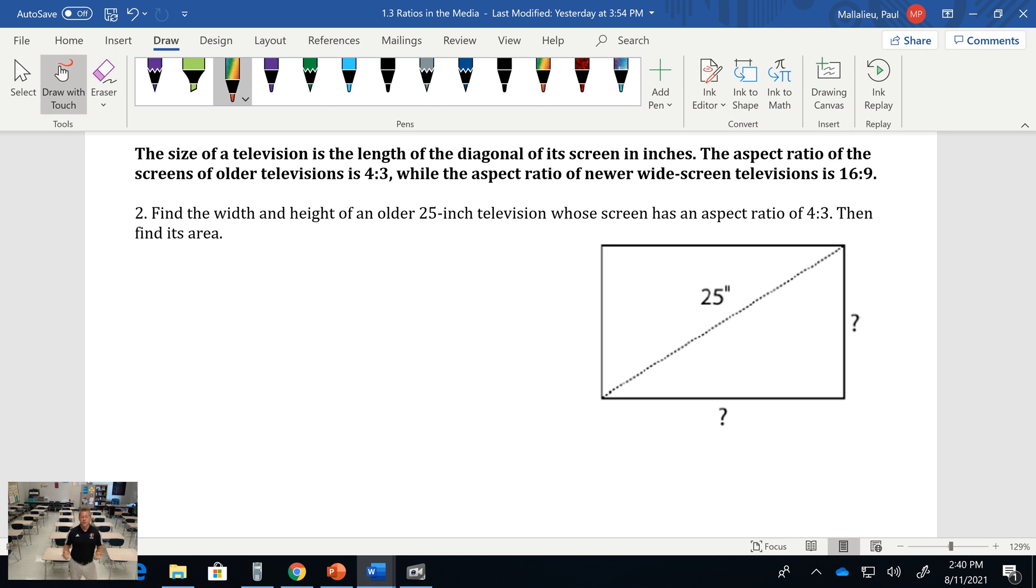Now widescreen TVs for the most part have 16 to 9 ratio. The clarity of picture with LED and plasma and 4K can change and vary, but just looking at our general aspect ratio, we're going to take the old one which was 4:3 and a new one which is 16:9.